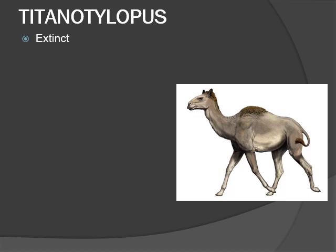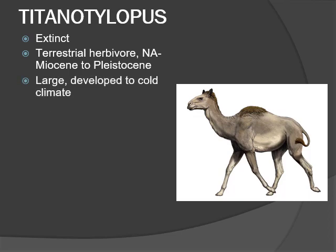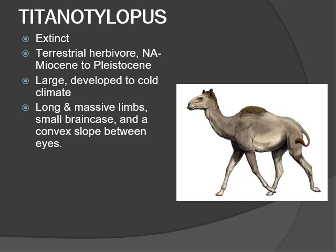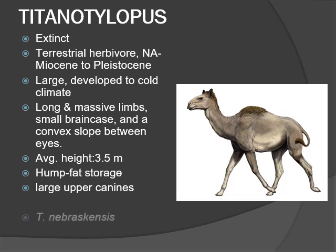Titanotylopus is an extinct genus. It was a terrestrial herbivore endemic to North America from the late Miocene to Pleistocene. It was extremely large in size and likely developed to acclimate to the cold climate. It possessed long, massive limbs, a comparatively small brain case, and a convex slope between the eyes. Its average height was 3.5 meters. Like modern camels, it possessed a hump for fat storage. Its distinguishing characteristic is the large upper canines. Here are the two species of Titanotylopus: Nebraskensis and Spatulus.